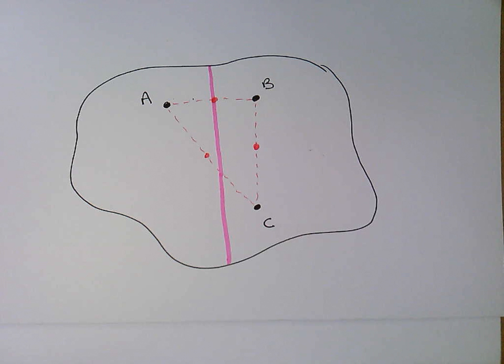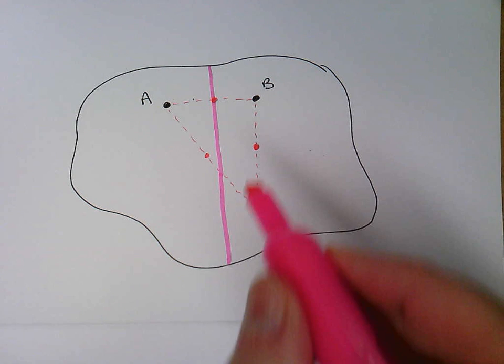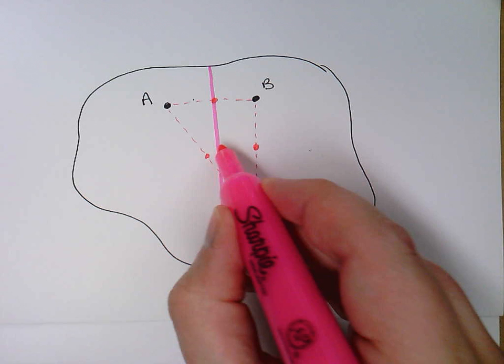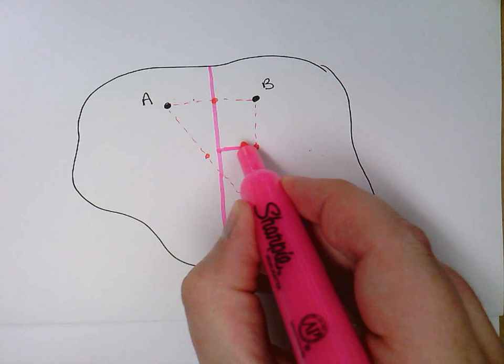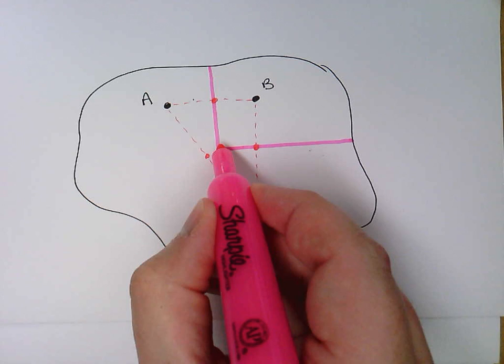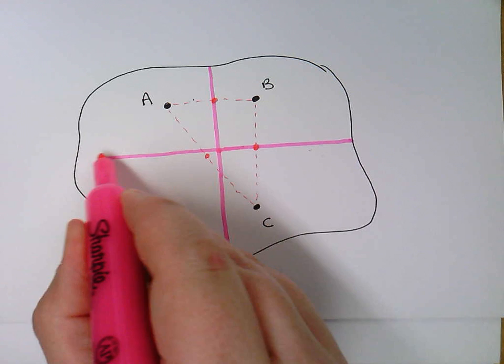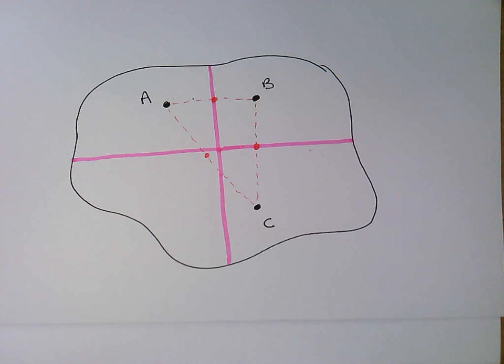What we can do though is also look at the relationship between B and C. And I'm just going to draw a perpendicular bisector there. And even though I know it's not going to be used, I'll carry it on over to that left side. And again, anything above that line that I just drew is closer to B. Anything below that line is closer to C.